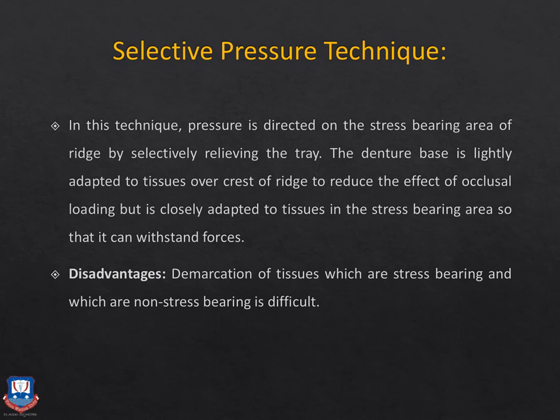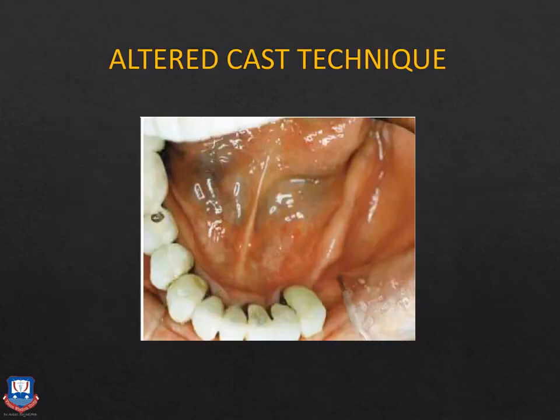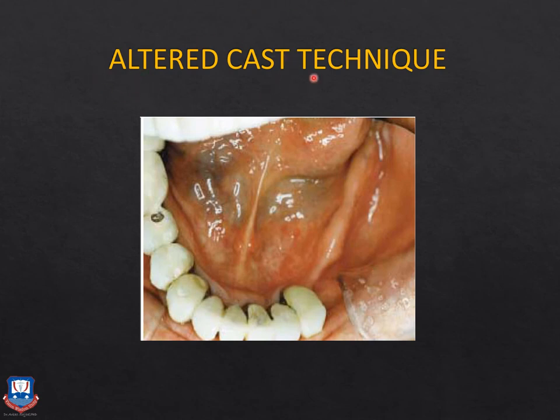The selective pressure impression technique is the same as used for complete dentures. Another technique, the altered cast impression technique, falls under neither functional nor selective pressure category. This technique is done after the master cast has been fabricated — all previous impression techniques are taken to fabricate the master cast on which the final denture will be fabricated. The altered cast technique modifies or corrects the master cast, which is why it is also called the corrected cast impression technique.